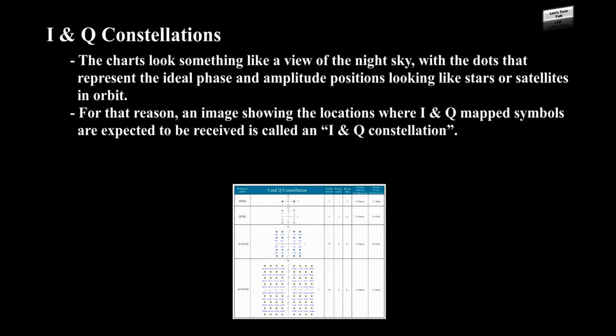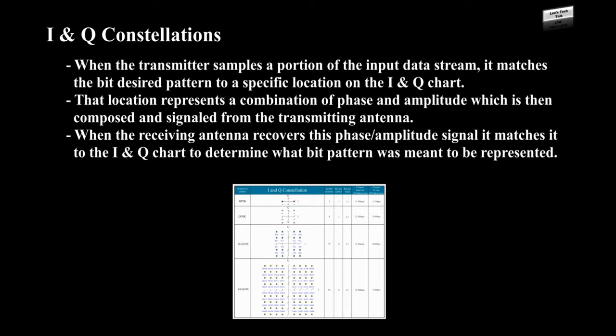The charts look something like a view of the night sky, with dots that represent the ideal phase and amplitude positions looking like stars or satellites in orbit. An image showing the locations where I and Q mapped symbols are expected to be received is called an I and Q constellation. When the transmitter samples a portion of the input data stream, it matches the bit pattern to a specific location on the I and Q chart, representing a combination of phase and amplitude. When the receiving antenna recovers this signal, it matches it to the I and Q chart to determine what bit pattern was represented.